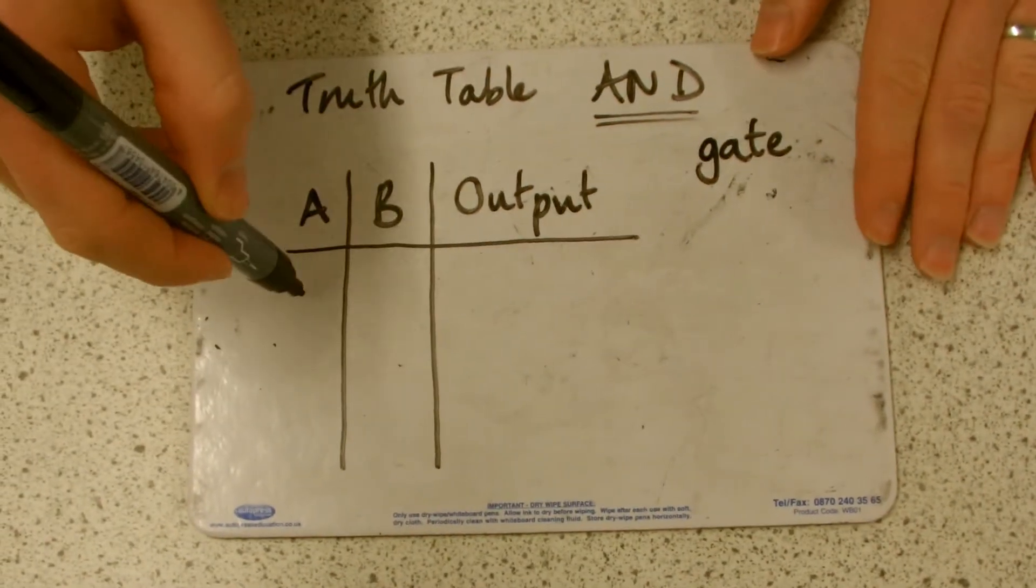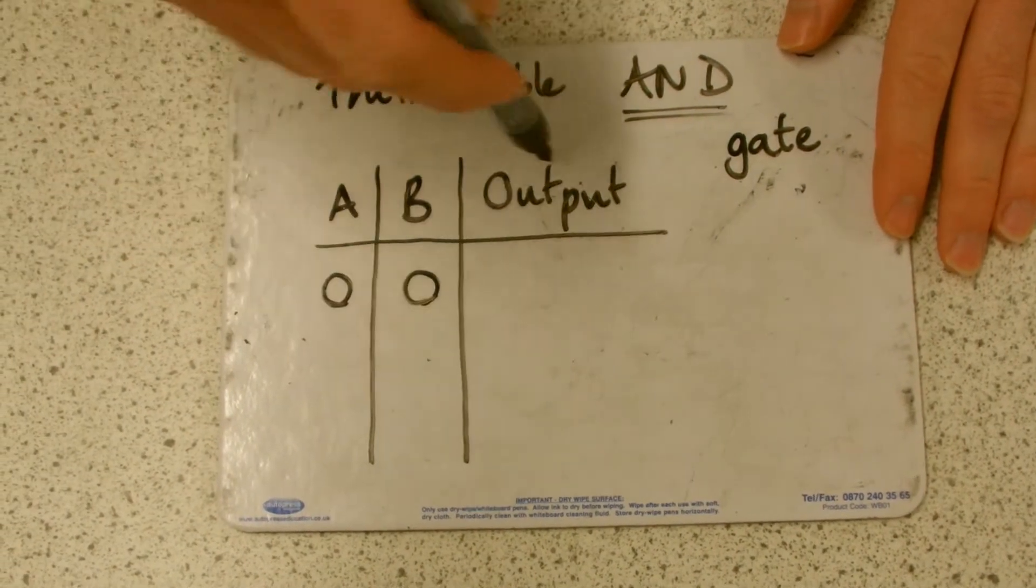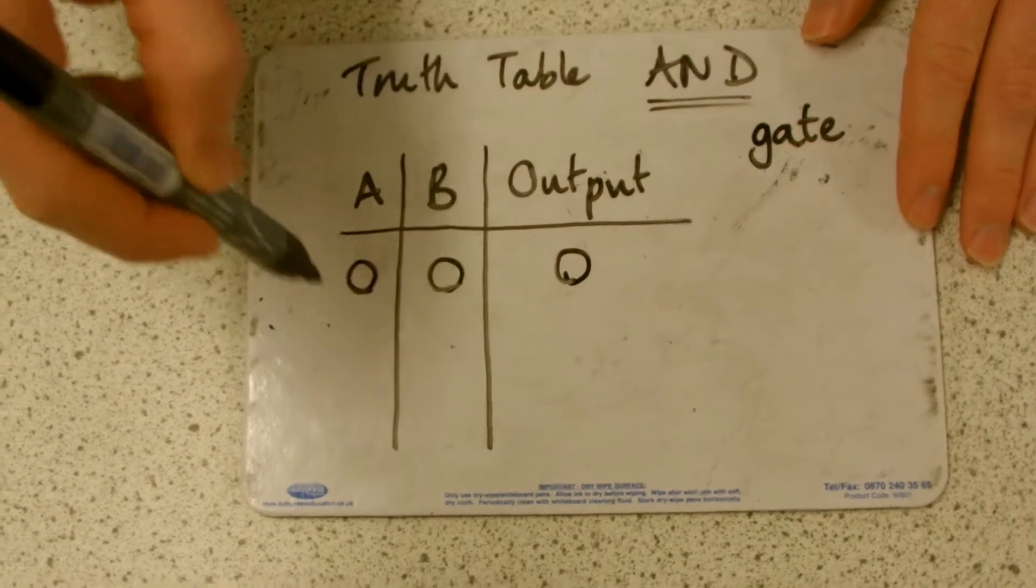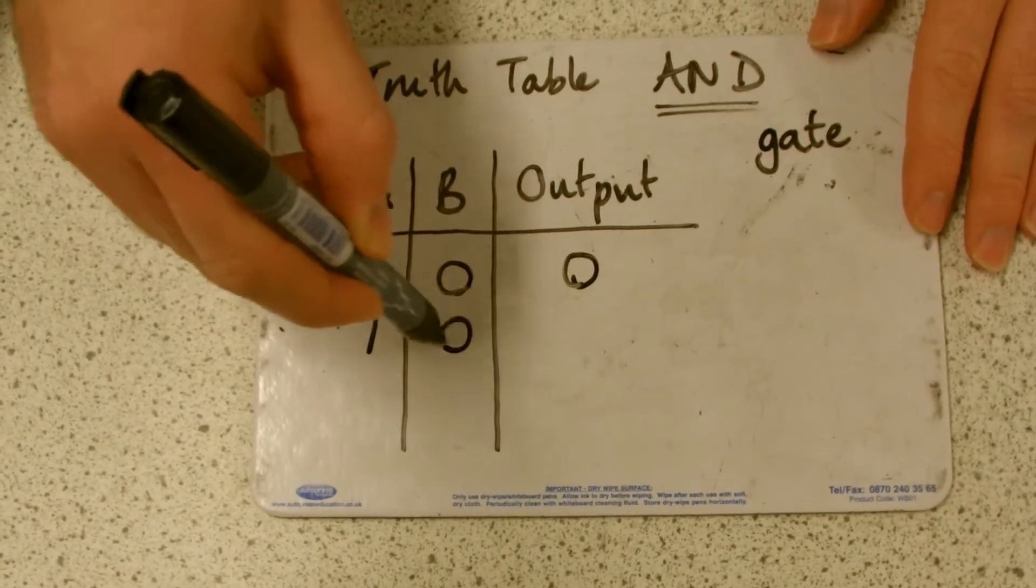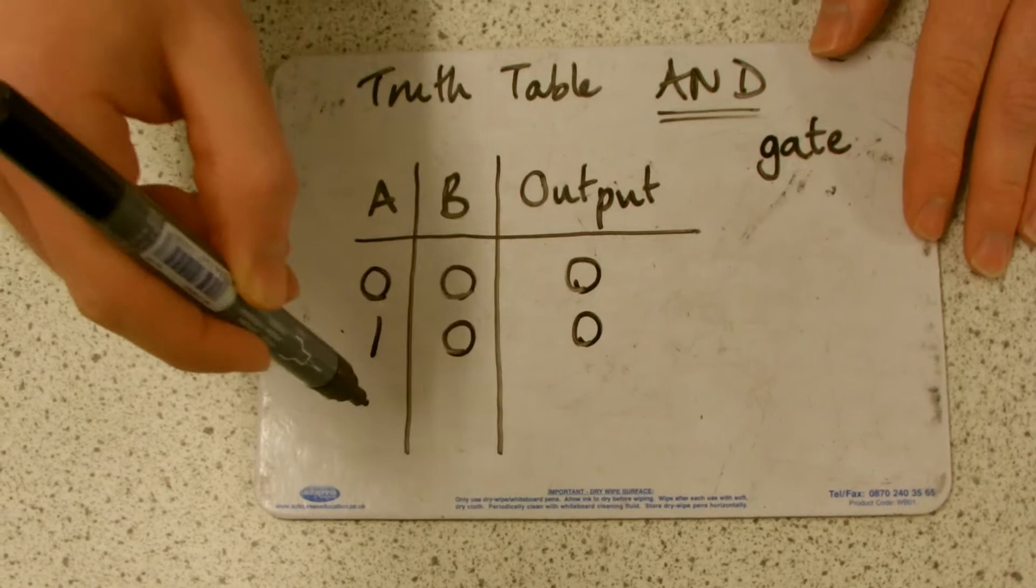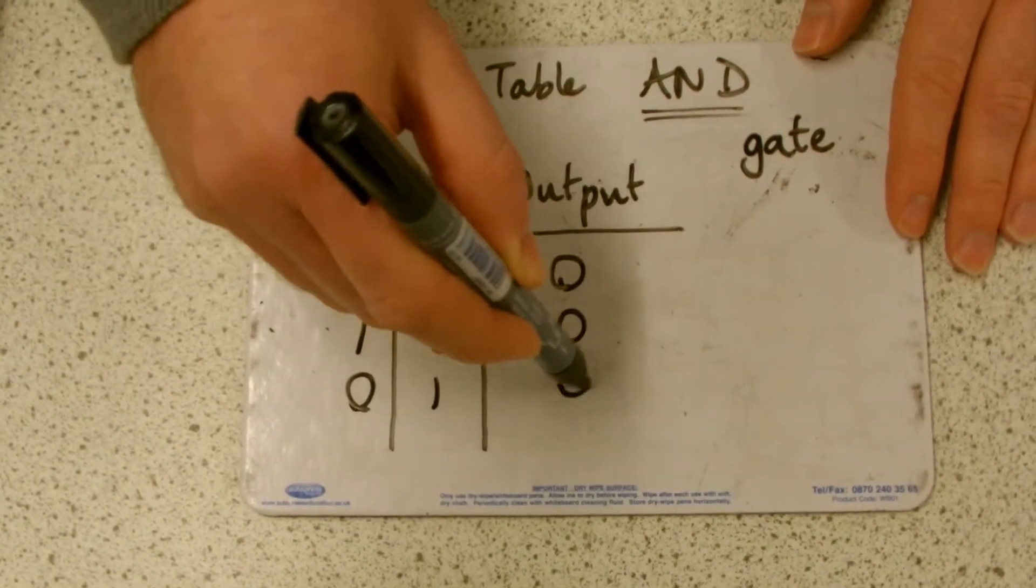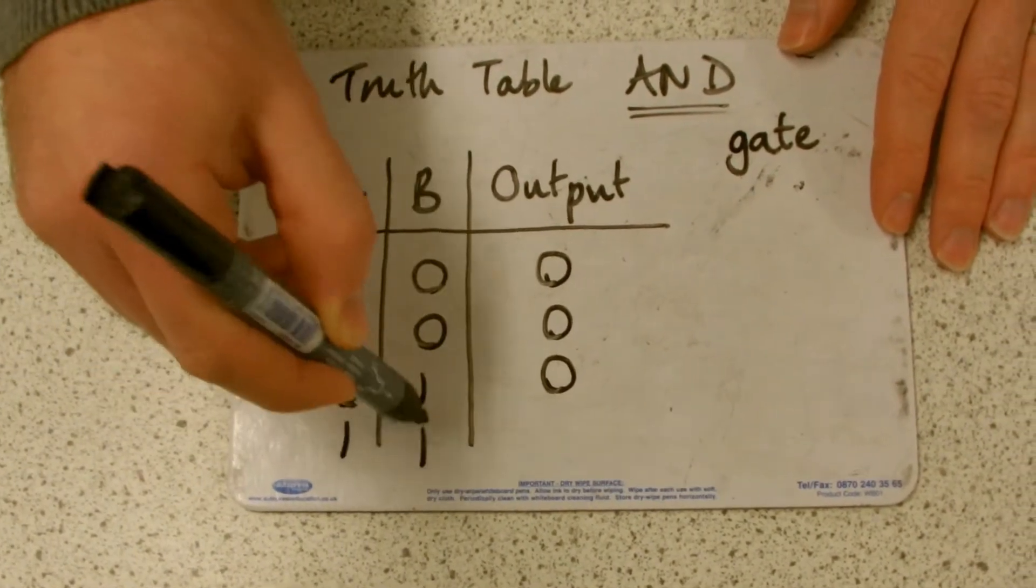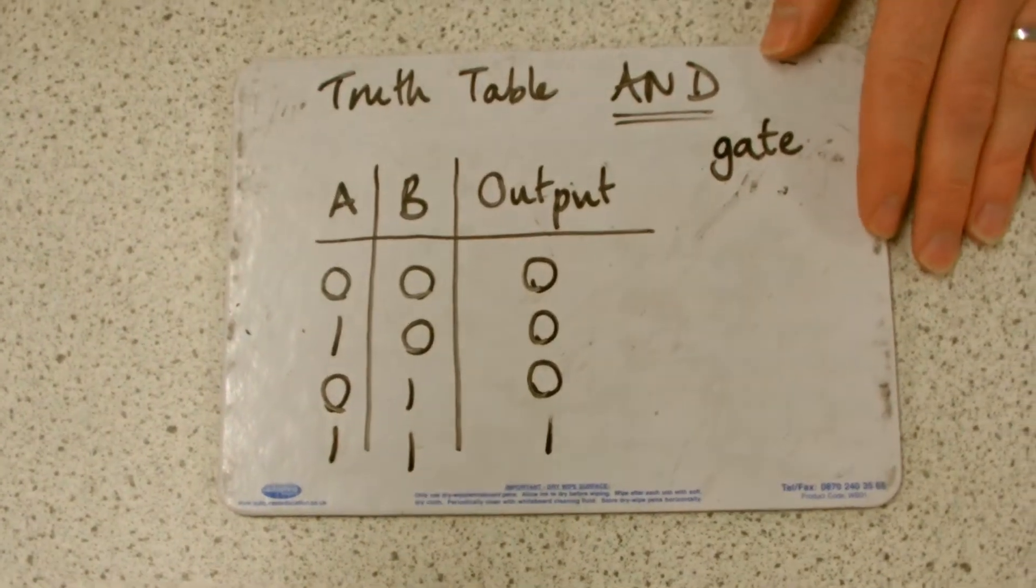So in the first instance we had A off and B off, so the output was off. Second one we had A on but B off, and the output was still off. Then we had A off but B on, and the output was off. But when both A and B were on, then the output was on.